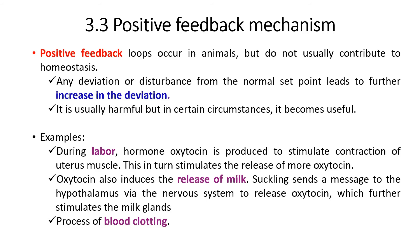As an example, during labor the hormone oxytocin is produced to stimulate contraction of the uterus muscle. This stimulates the release of more oxytocin, and more oxytocin causes the uterus muscle to contract more, helping the labor process. Oxytocin also induces the release of milk — suckling sends a message to the hypothalamus via the nervous system to release oxytocin, which further stimulates the milk glands to produce more milk. The third example is the process of blood clotting.